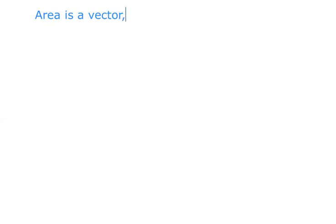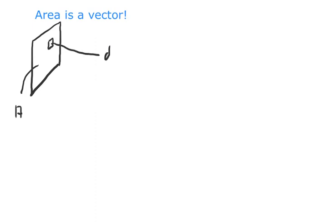We are sometimes used to thinking about area as a number, but in vector calculus that's not true. Area is actually a vector. Let's see how that works. We had a square loop of area A, and we divide it into small patches — dF, dS — our friends, the differential surface elements.